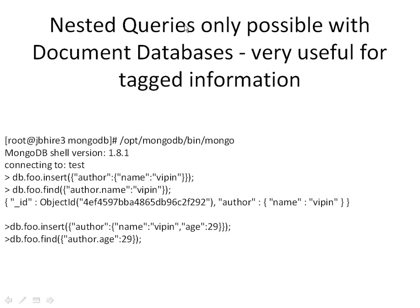Let's talk about document databases — what exactly is a document. Here we have a document with an attribute author which has a name. If I want to query 'give me all entries where author.name is weapon', I can easily do it in MongoDB by querying author.name equals weapon. But this is not possible in relational databases — there, to maintain this relation, I'd have to insert the name into another table and perform a join query. Join queries reduce the performance of select, but this is not the case with MongoDB.